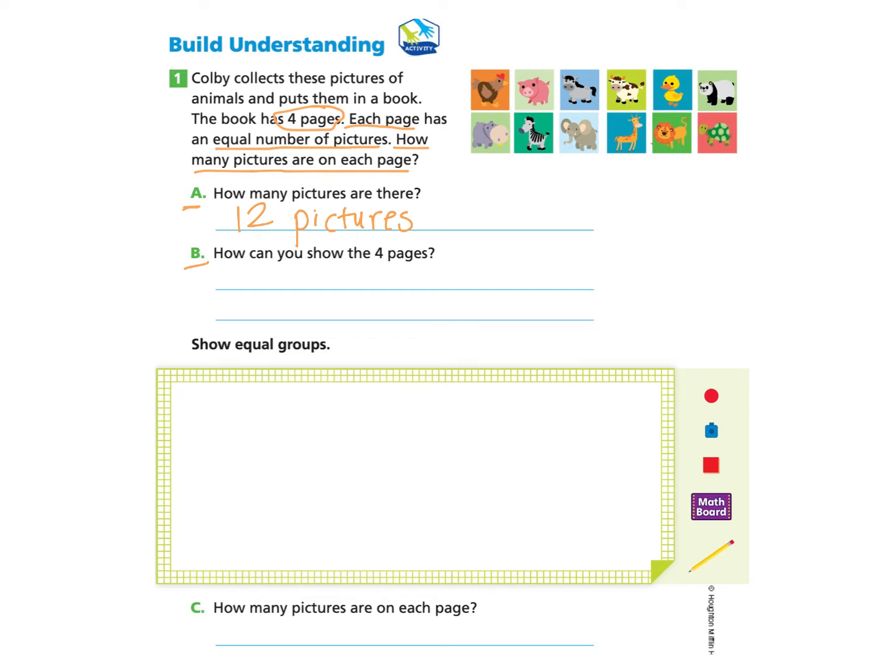Part B. How can you show the four pages? You may want to pause for some think time. One strategy would be for you to draw four circles to show the four pages. I can explain my thinking by writing, I can draw one circle for each page, which would be four circles. If you need to pause to write this in, you can do that.